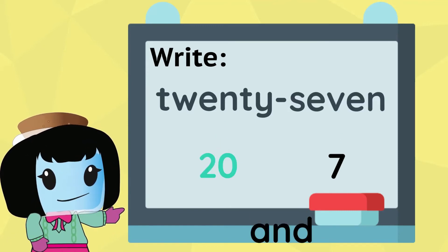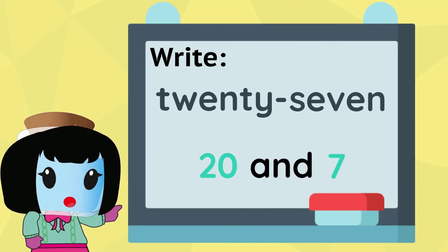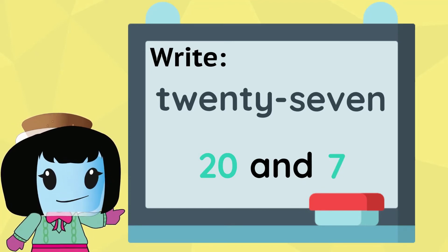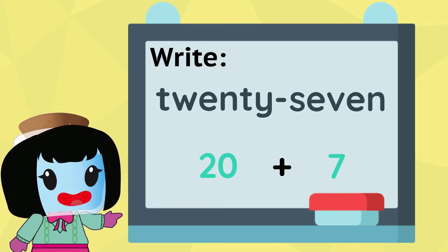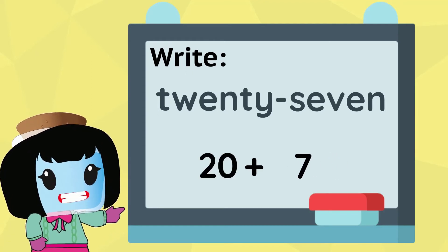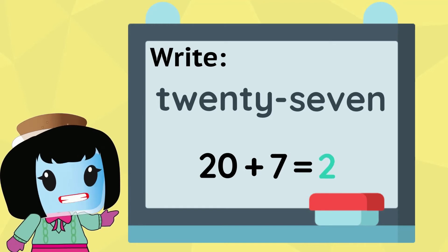Now we have twenty and seven. To write it as one number, we would add the twenty and the seven together. So twenty plus seven would create the number twenty-seven.